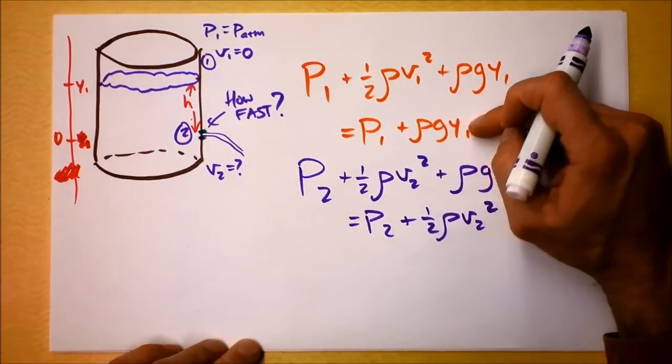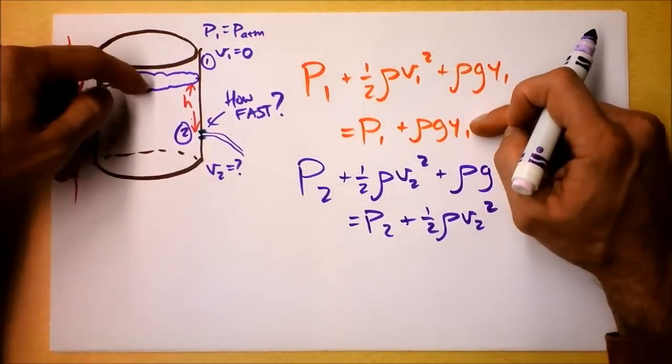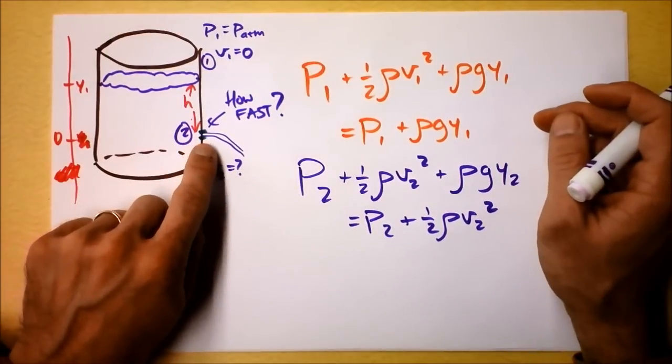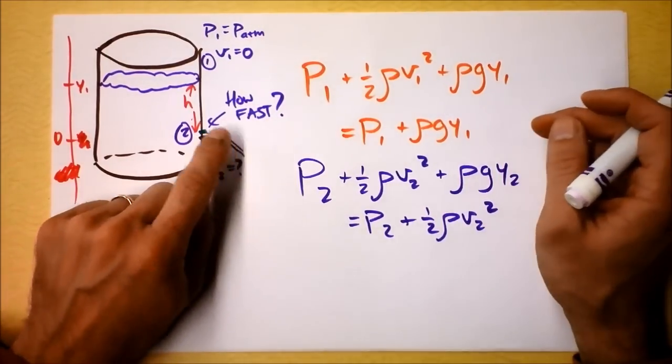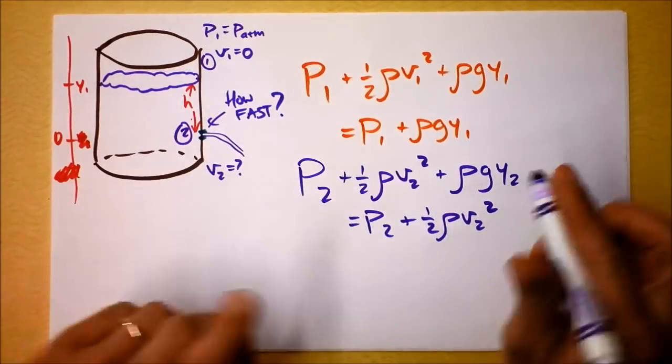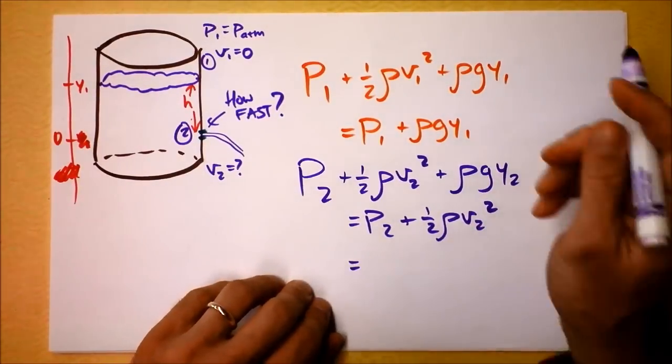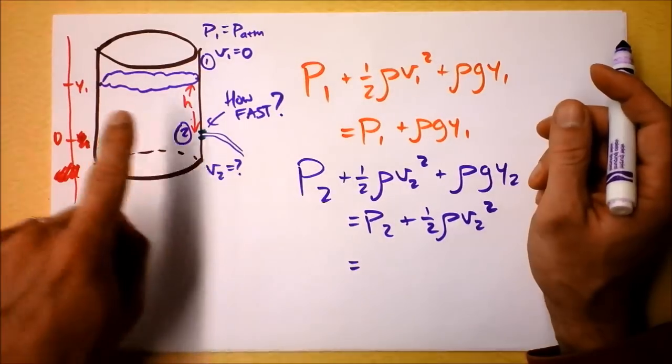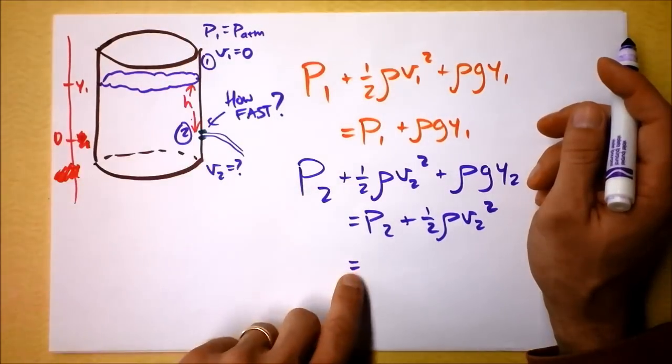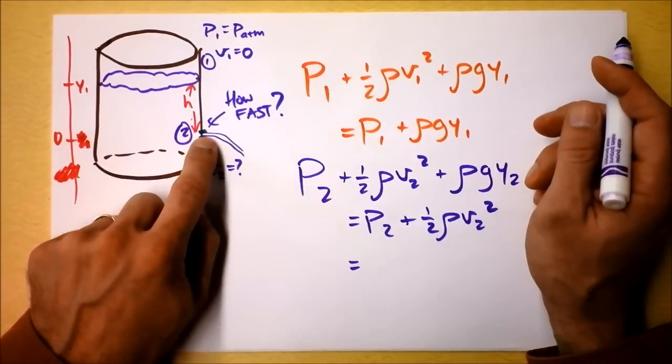I want you to agree that this is the statement of the energy of the system with the water up here. When the water is down here, it's moving, but it's shooting out here, and it's at a height of 0. So, the only thing we need to do further is identify what P1 is, which is atmospheric pressure, right? What is the pressure at this location right here?